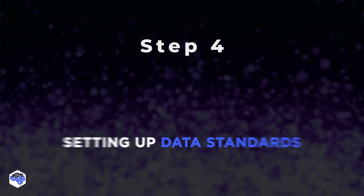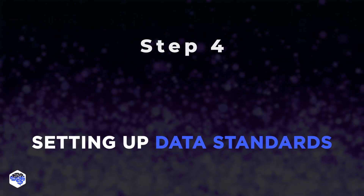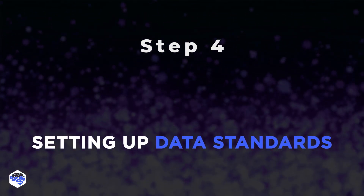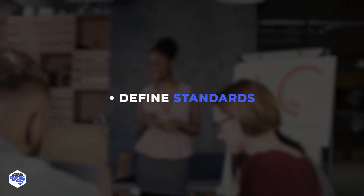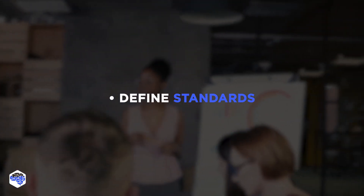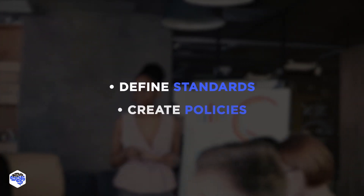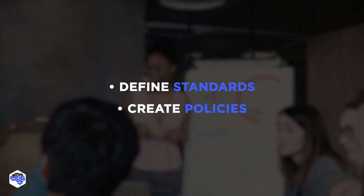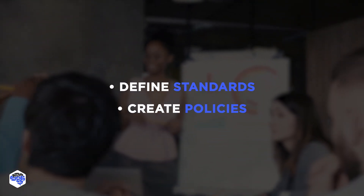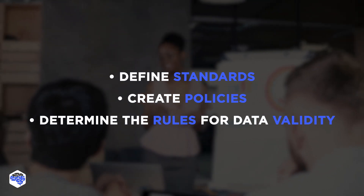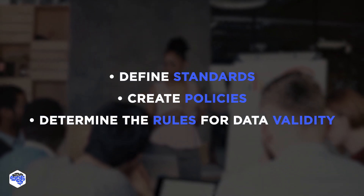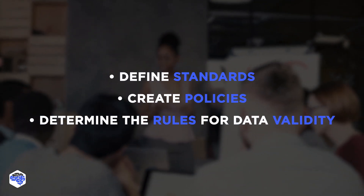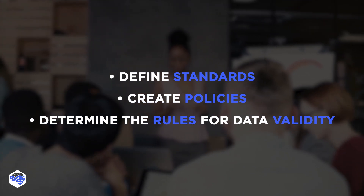The next step is setting up data standards and management rules. The team should define standards on data formatting, entry, exchange, and representation; create policies on meta tags update and storage; and determine the rules for data validity. By the end of this stage, you should already have a full wiki of the best data management practices.